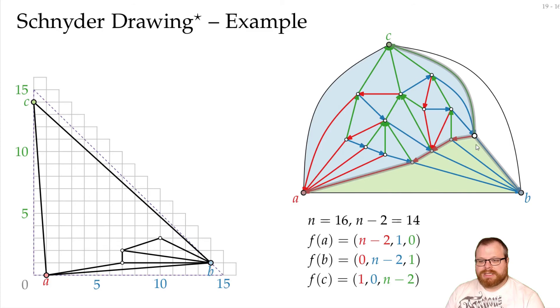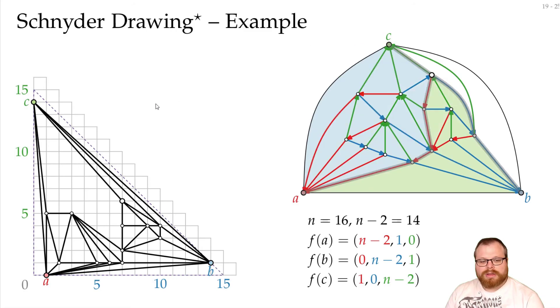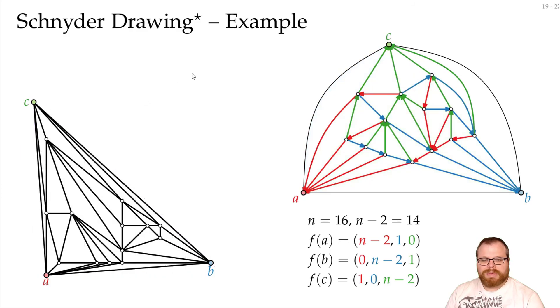And the same way we can continue, we always count for the y-coordinate how many vertices in the interior of the green end on this path, and for the blue, so for the x-coordinate, how many interior vertices in this end on this path. And that way we get all the coordinates we need, and in the very end, a planar drawing.